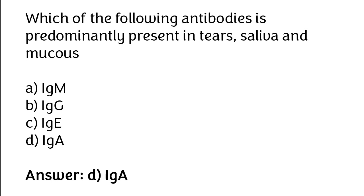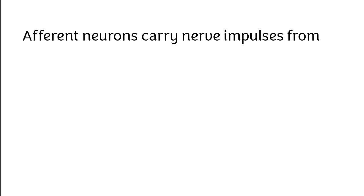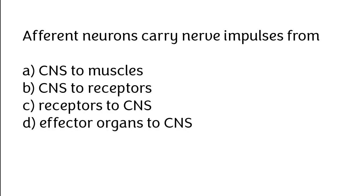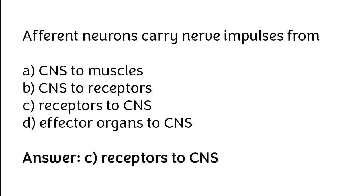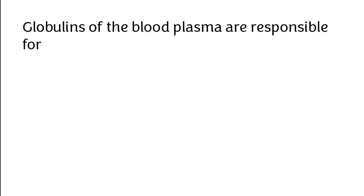Efferent neurons carry nerve impulses from: CNS to muscles, CNS to receptors, receptors to CNS, or effector organs to CNS. The correct answer is option A: efferent neurons carry nerve impulses from the CNS to muscles.